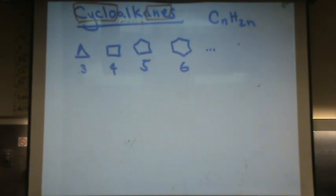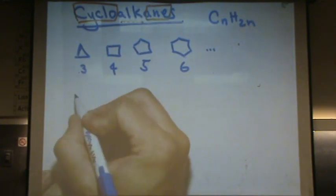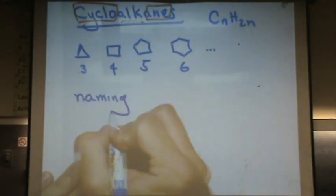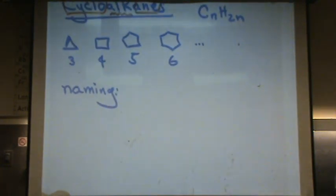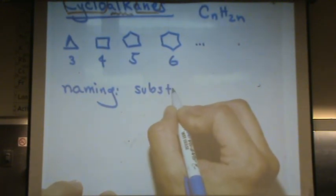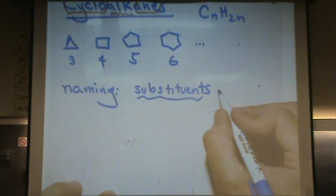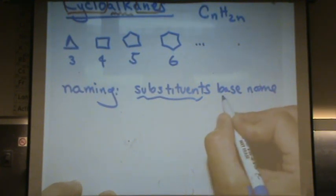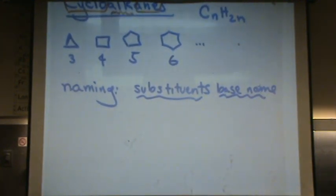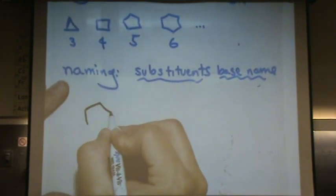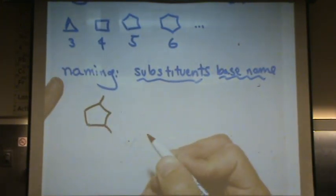Here we'll do examples as well, but the naming goes as follows. Kind of similar, a little bit different. But you still do all the substituents, the branches, first, and then the base name. Numbering can be a little more funky with this one. It depends what position do you put the one in - at the top, the right, left, bottom, wherever. Let me show you a couple examples of what this could look like.